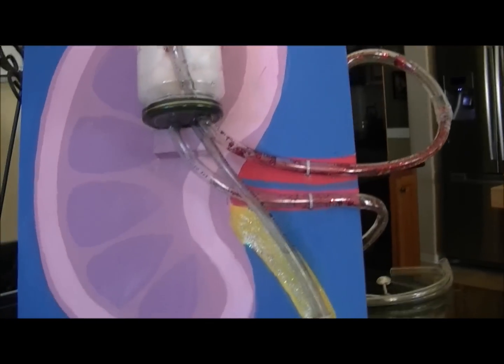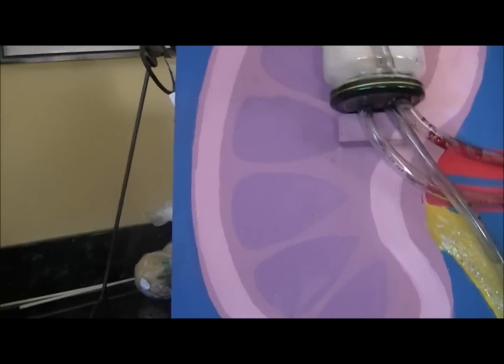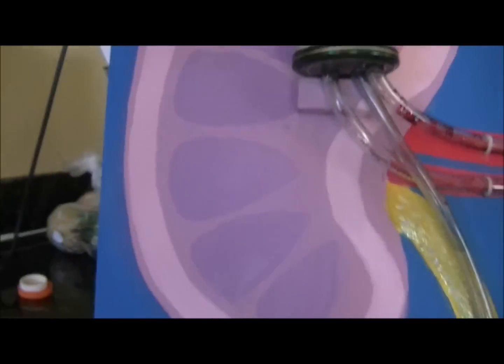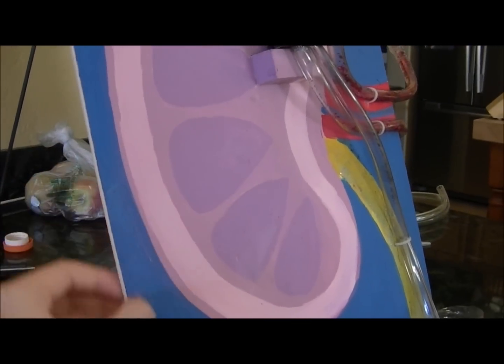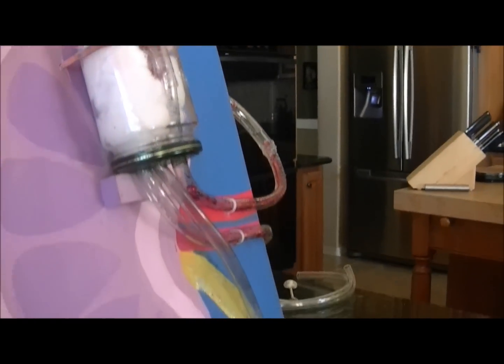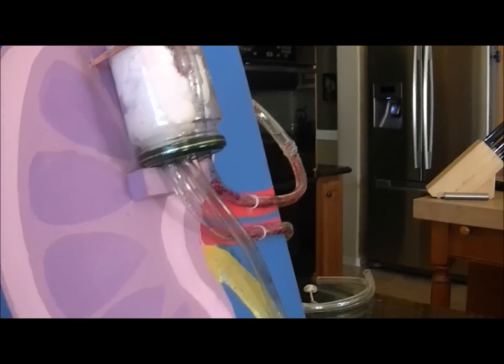First I'll start by telling you all the materials you need. Basic is the wood. This is just a piece of wood right here that I painted to look like a kidney because the model itself of the kidney doesn't really look anything recognizable.